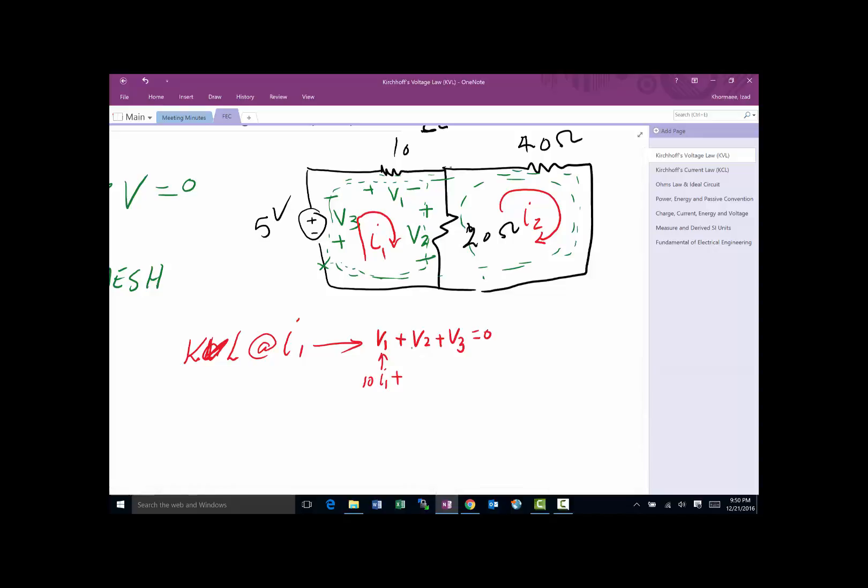V2 is a little more tricky. I have a 20 ohm resistor. What is the current that flows here? I1 is flowing this way, but I2 is coming back against it, so you write it as I1 minus I2. V3 is interesting too—we assumed it was plus and minus, but it's actually minus and plus, so V3 is minus 5 volts. Now we've got the first equation.